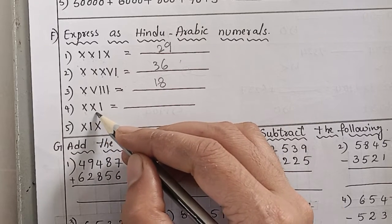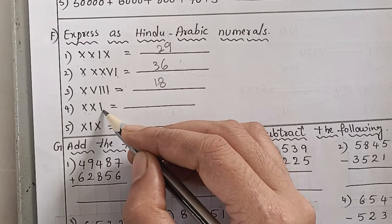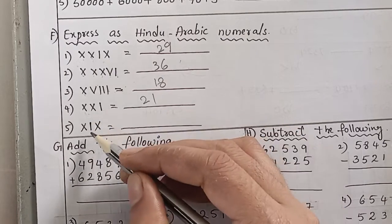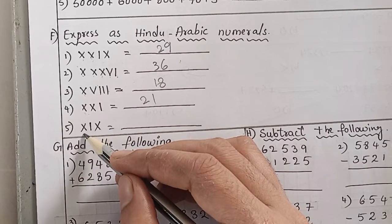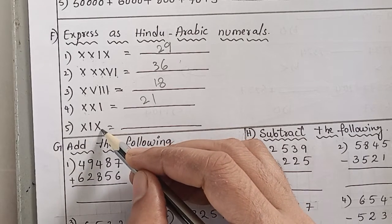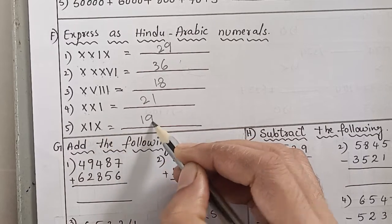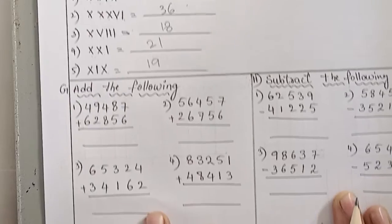Next: XXI — ten plus ten is twenty, plus I is one, so twenty-one. Next: XIX — X means ten, IX means nine, so ten plus nine is nineteen.